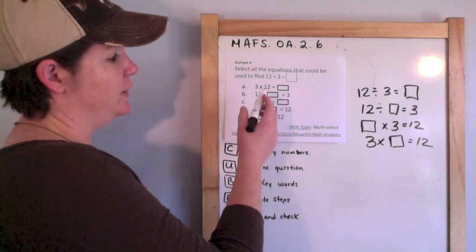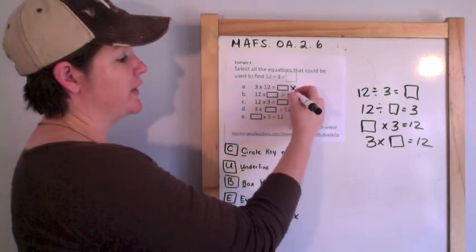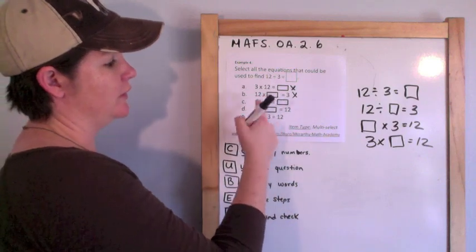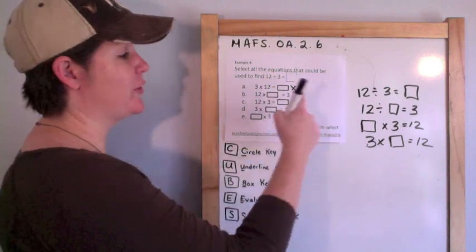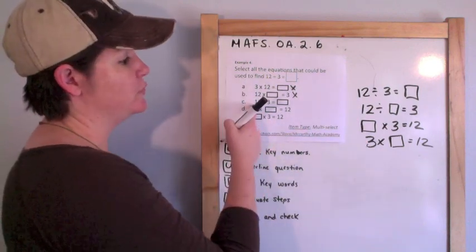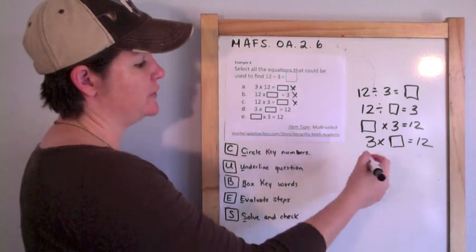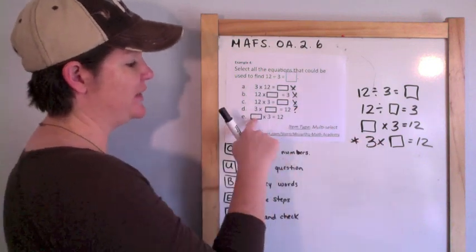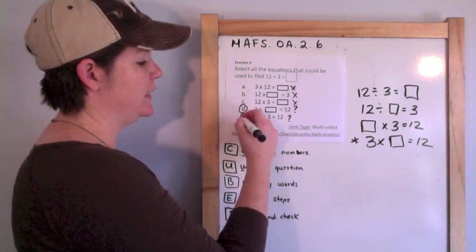So, what matches that? Do I have 3 times 12? No. 12 times box? No, I have 12 divided by the unknown but not 12 times the unknown. 12 times 3? No. Do I have 3 times the unknown? Yes. Do I have the unknown times 3 equals 12? Yes. So the answers are D and E.